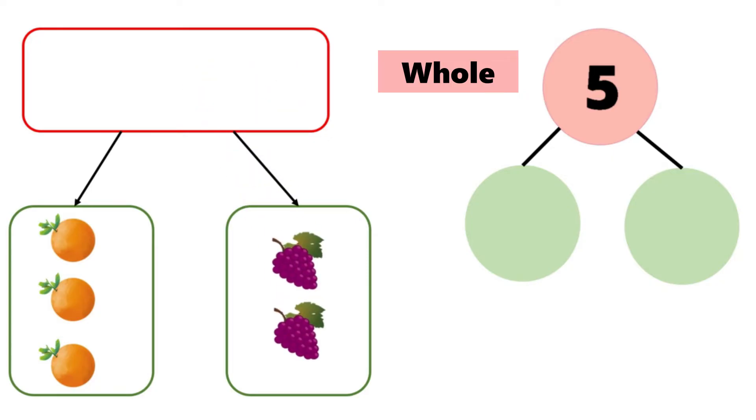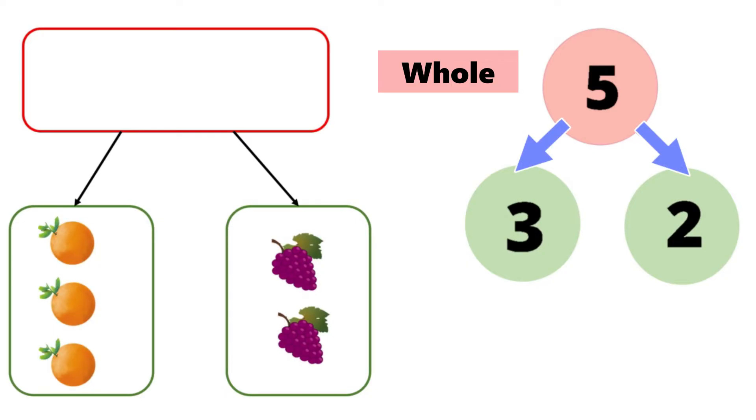How many oranges are there? There are one, two, three oranges. How many grapes? One, two. So the whole five can be broken up into smaller numbers three and two. Three and two are parts.